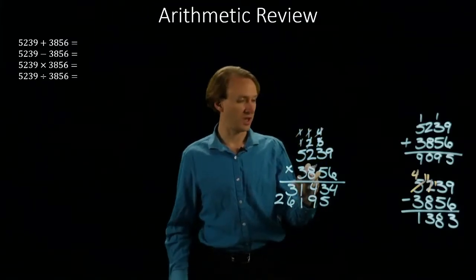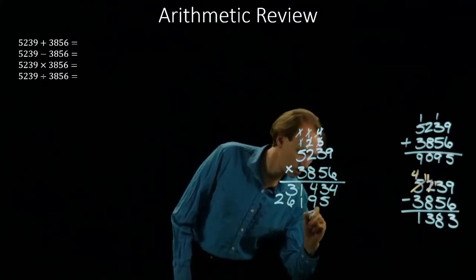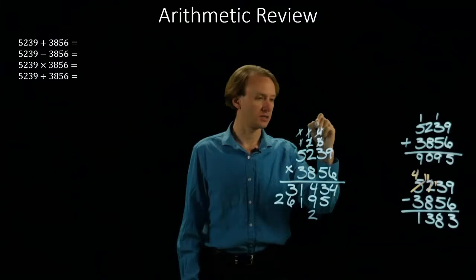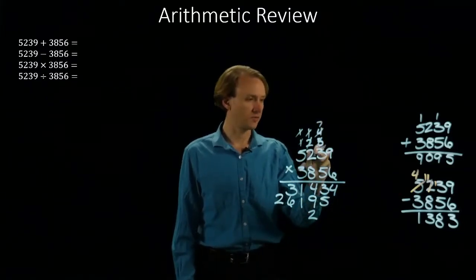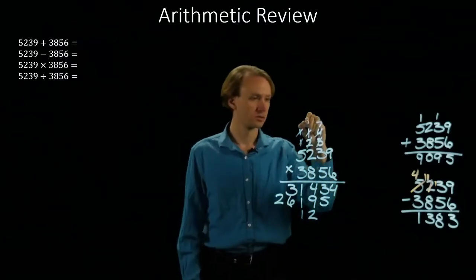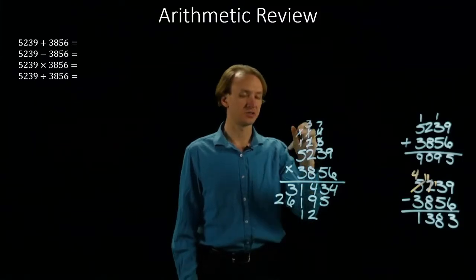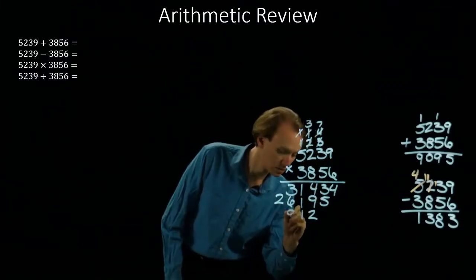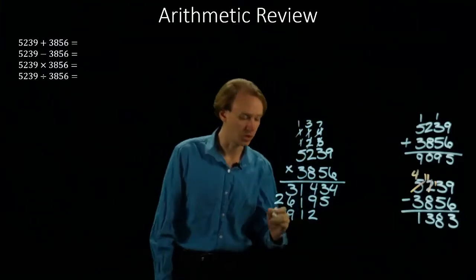And again, with the 8. So 8 times 9 is 72. Down the 2, carry a 7. 8 times 3 is 24, plus 7 gives me 31. 8 times 2 is 16, plus 3 is 19. And then 8 times 5 is 40, plus 1 is 41.